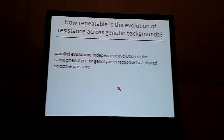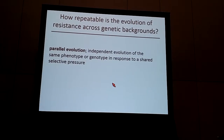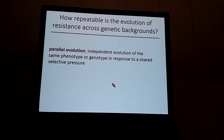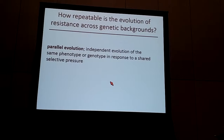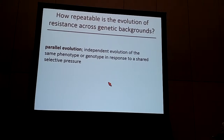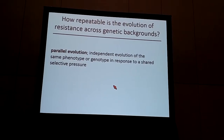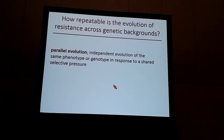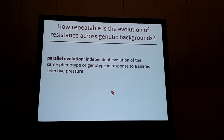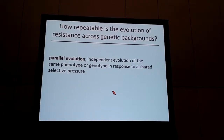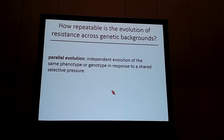The main motivating question for this project is: how repeatable is the evolution of resistance across genetic backgrounds? I'll refer to parallel evolution a lot — by that I mean the independent evolution of the same phenotype or genotype in response to shared selective pressure. When I do experimental evolution with an antibiotic as the selective pressure, this results in resistance, and we expected it would likely be highly repeatable across genetic backgrounds.